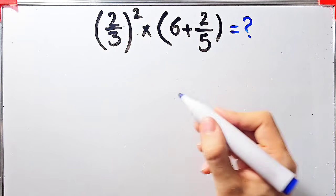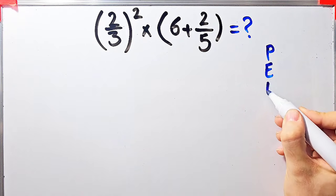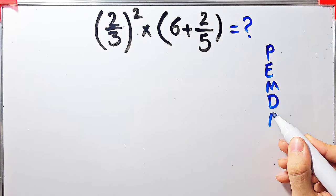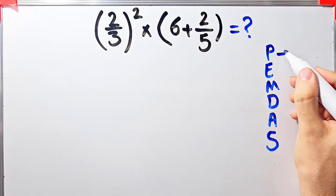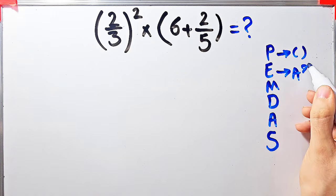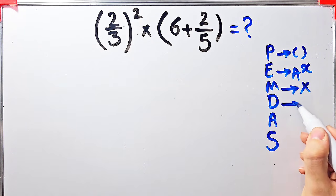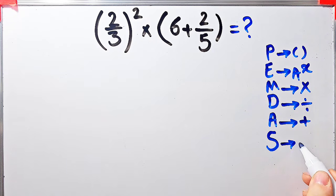To solve this question we need to follow the order of operations, which is PEMDAS. PEMDAS shows the priority of the mathematical operations. If you don't pay attention to this rule you get the wrong answer. P stands for parentheses, E stands for exponent, M stands for multiplication, D stands for division, A stands for addition, and S stands for subtraction.